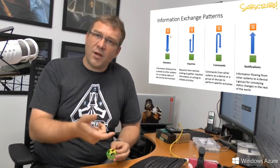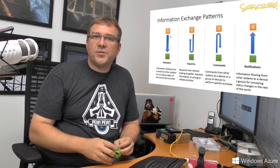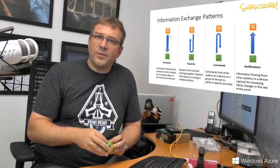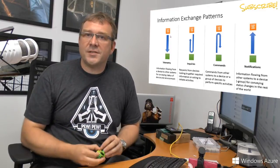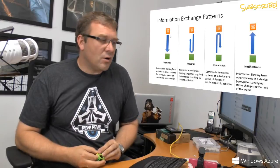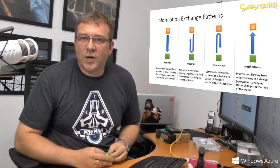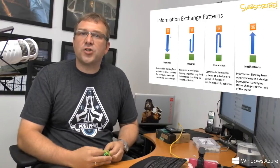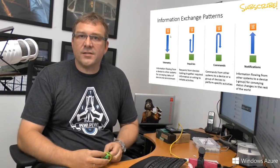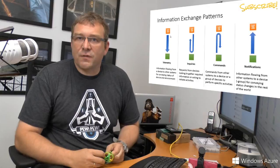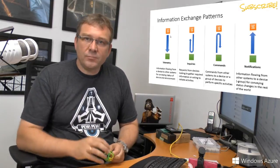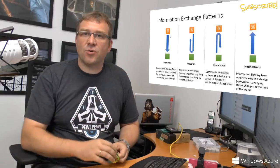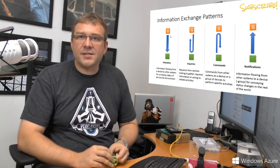Commands are exactly the opposite direction. You have a service in the cloud or a control system on the factory floor or in city hall — for smart cities — that wants to actuate something: turn on all the street lights or change configuration values in a machine. That's a command that requires physical action or reconfiguration of the device.